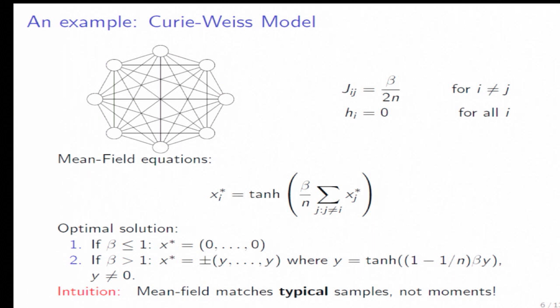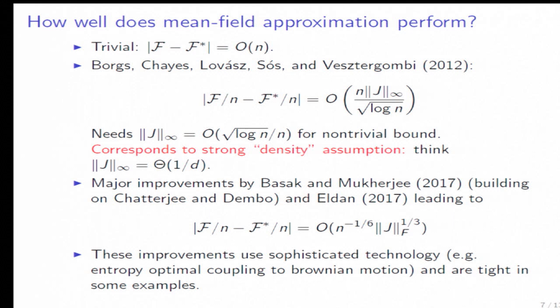And if beta is bigger than one, I get, there's actually two optimal solutions that are symmetrical. And basically, when beta is big, these are close to all ones, or all negative ones. So the thing to understand here is mean field, it matches a product distribution to the model, but it doesn't moment match. It tries to produce something which looks like a typical sample from the model. So yeah, obviously, that's much different from moment matching.